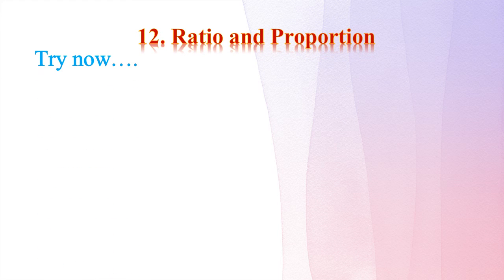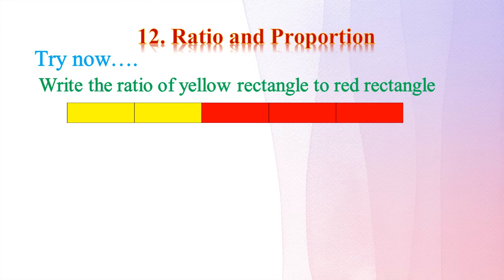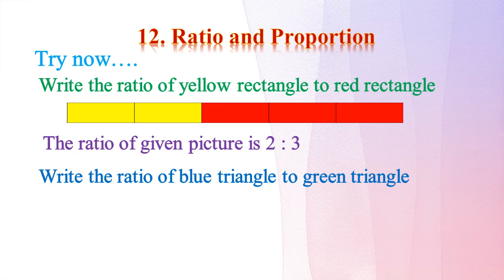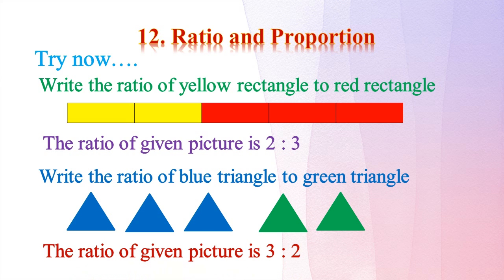Now let's try some practice. Write the ratio of yellow rectangles to red rectangles. There are two yellow rectangles and three red rectangles, so the ratio is 2 is to 3. Write the ratio of blue triangles to green triangles. There are three blue triangles and two green triangles, so the ratio is 3 is to 2.